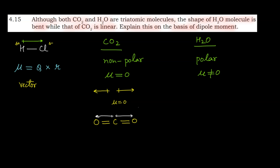H2O एक polar molecule है — experimentally dipole moment की कुछ ना कुछ value आती है. इसका मतलब है कि जो दो OH dipoles हैं, उनका sum 0 के equal नहीं आएगा — वो एक दूसरे को cancel out नहीं करेंगे, मतलब वो किसी angle पर placed हैं. H2O की structure में oxygen के साथ दो hydrogen हैं, और dipole moments less electronegative से more electronegative की तरफ दिखाते हैं. दोनों vectors cancel नहीं होते, एक resultant vector बनता है जो 0 के equal नहीं होता.